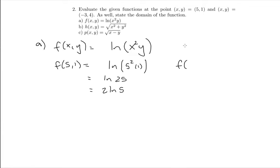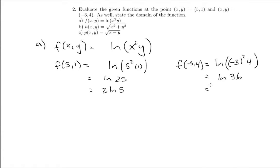Next we'd like to know the value of the function at negative 3, 4. We replace every x by negative 3 and every y by 4. So this becomes the natural log of negative 3 squared times 4, which is the natural log of 9 times 4, or the natural log of 36. We can note that 36 is 6 squared, so this would become 2 ln 6.